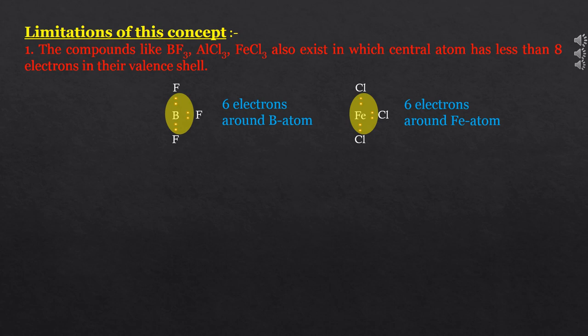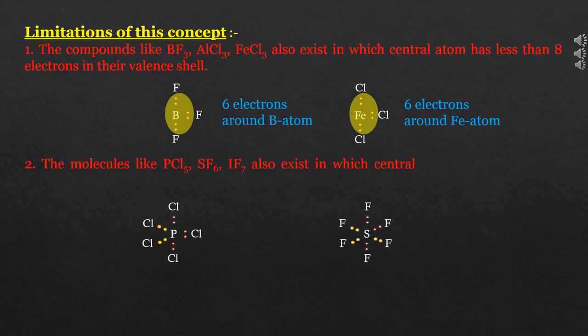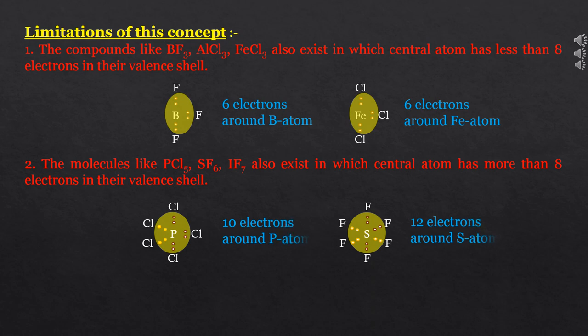Second limitation: molecules like PCl5, SF6, and IF7 also exist in which the central atom has more than 8 electrons in their valence shell. In these molecules, even though the noble gas configuration — that is, the octet — is exceeded, the molecules still exist.